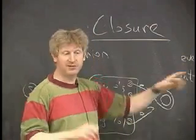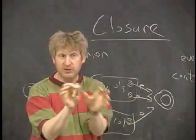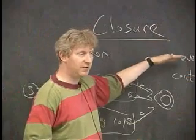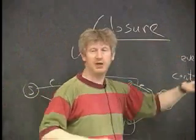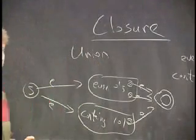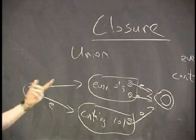Take any string from this set, any string from that set, connect them together. The set of all those strings is the concatenation of these two. Take all the strings with even number of 0's, connect onto them any string containing 1, 0, 1. All those strings are in the concatenation.